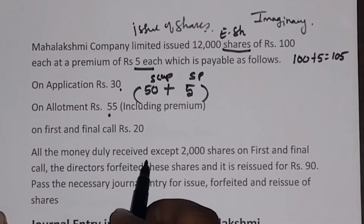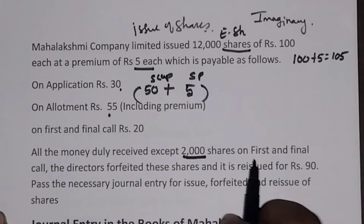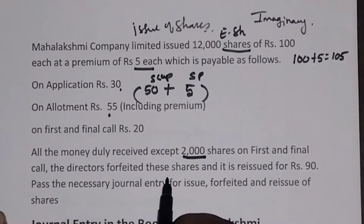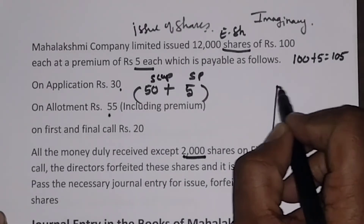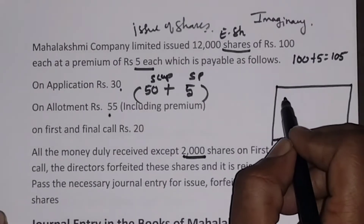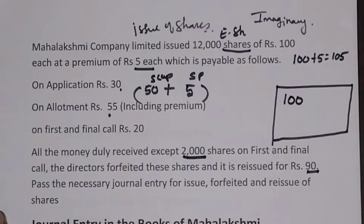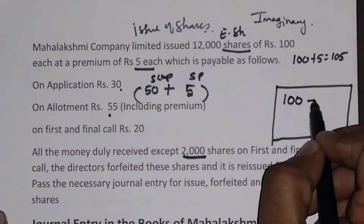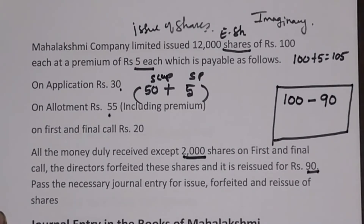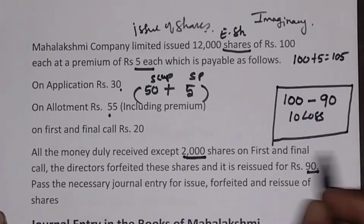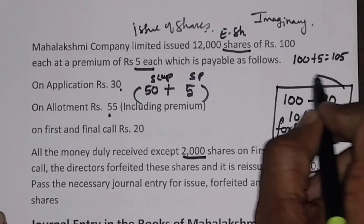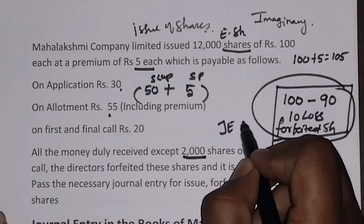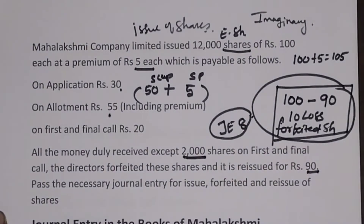All the money was duly received except for 2,000 shares on first and final call. The directors forfeited these shares, and they were reissued for Rs. 90. Whenever shares are reissued, we should note that the cost of the share is Rs. 100, but after forfeiture it is sold for Rs. 90. The remaining Rs. 10 is the loss. This loss will be adjusted from the forfeited share account in journal entry number 8. Now let us pass the journal entries.